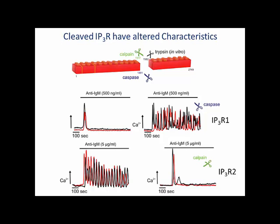Given that calcium oscillations are typically decoded in a different manner to single transients, it's likely that the alteration in the signal will alter cell function. Since there's mounting evidence that low levels of protease activity, which do not promote cell death, are important for adaptive responses, further work is ongoing to define a role for cleaved IP3 receptors in these processes.